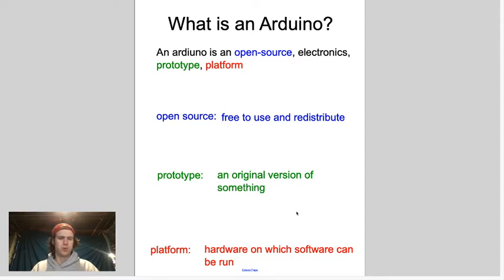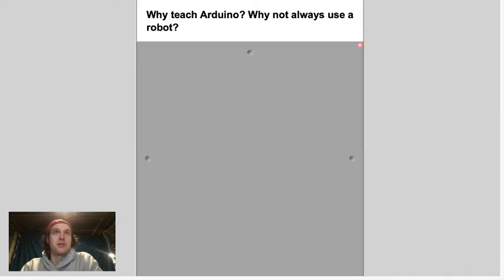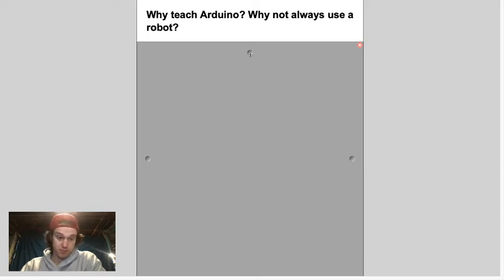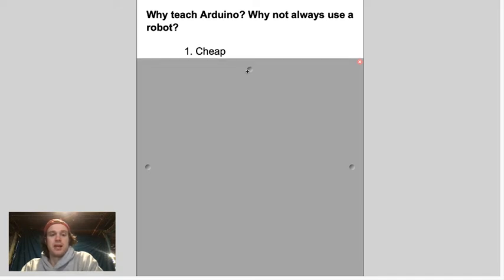You might wonder: why not just use a robot? It had motors, it had sensors — can't I just use that all the time? The answer is yes, but you're going to pay a lot more. Arduinos are really cheap — the board itself is about $25, the whole kit with all components is about $45. A LEGO robot is like $400 — about ten times the price.